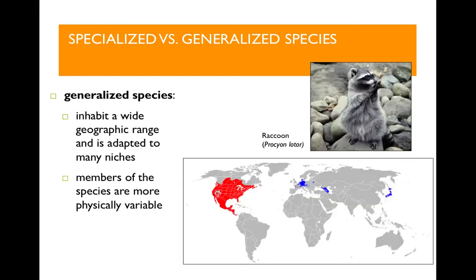The opposite of a specialized species would be a generalized species. Generalized species inhabit a wide geographic range and are adapted to many different environments. The members of a generalized species are also more physically variable — they look different from place to place. A good example would be the raccoon. We've got raccoons all over North America, up into Canada, all the way down into Central America. And from place to place, raccoons look a little different — Canadian raccoons look a little different than Nicaraguan raccoons, or raccoons in LA look a little different than those in New York.